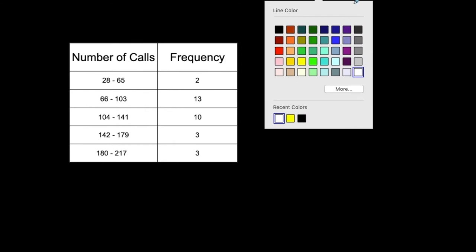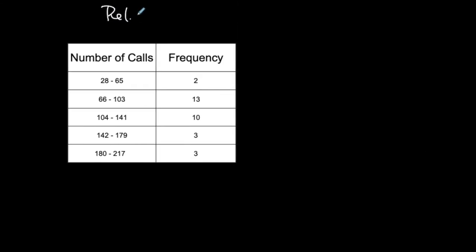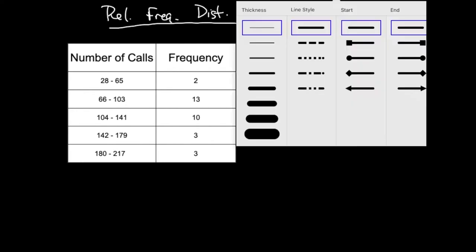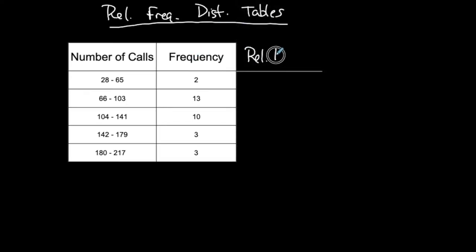We're doing relative frequency distribution tables. You've already done frequency distribution tables, and this is an example of one from a previous video. I'm going to extend it and add relative frequencies. To create a relative frequency table, the relative frequency column technically replaces the frequency column, but since the frequency column is already here, I'll use it.